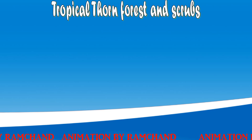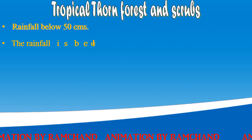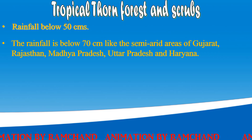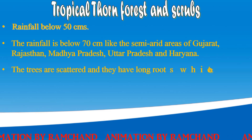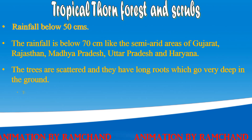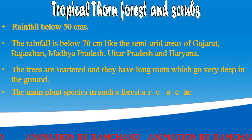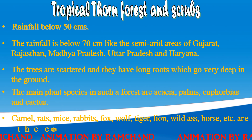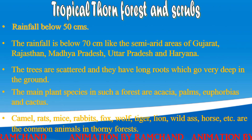Tropical thorn forests and scrubs are found in areas with rainfall below 70 centimeters, like the semi-arid areas of Gujarat, Rajasthan, Madhya Pradesh, Andhra Pradesh, and Haryana. Trees are scattered and have long roots that go very deep in the ground. Main plant species include acacia, palms, euphorbias, and cactus. Common animals include camels, rats, mice, rabbits, fox, wolf, tiger, lion, wild ass, and horse.